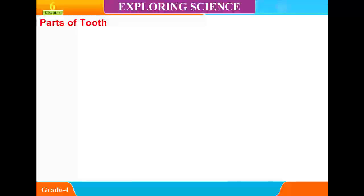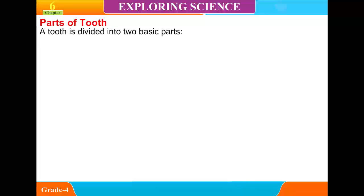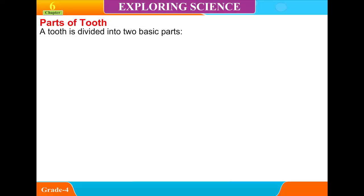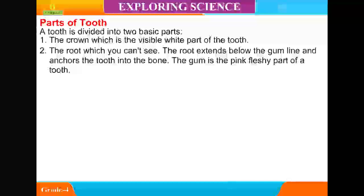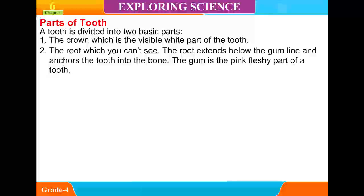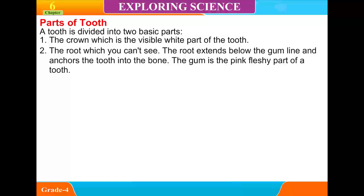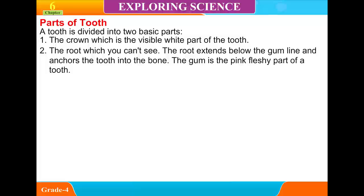Parts of Tooth. A tooth is divided into two basic parts. First, the crown, which is the visible part of the tooth. Second, the root, which you can't see. The root extends below the gum line and anchors the tooth into the bone.